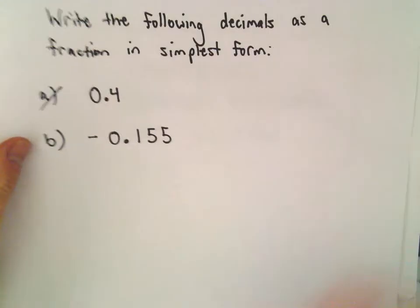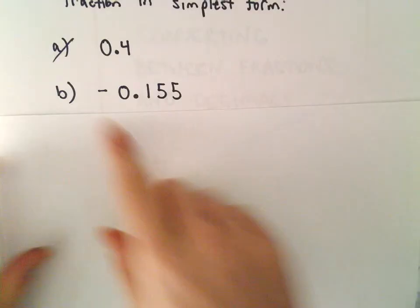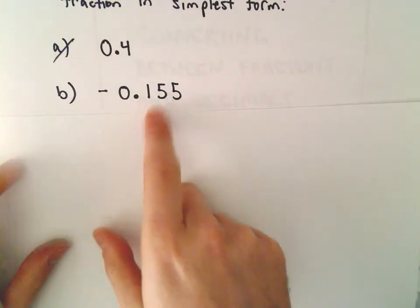Alright, so another example here of converting from a decimal to a fraction. I'm going to do it the exact same way. So here we have negative 0.155.